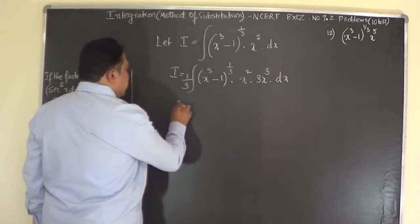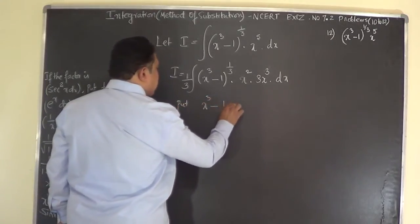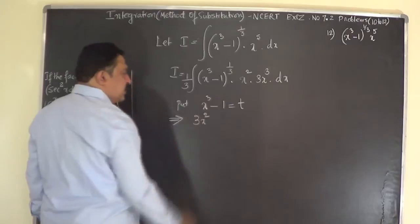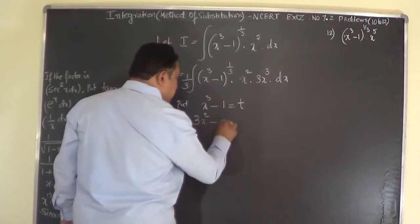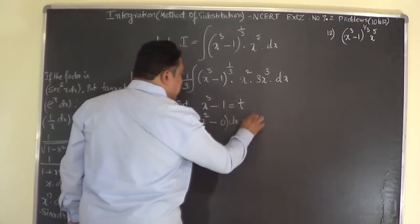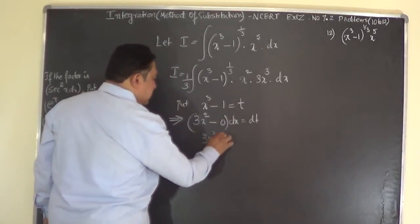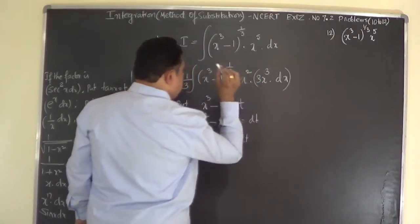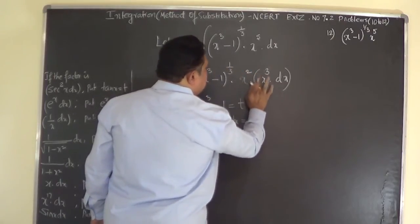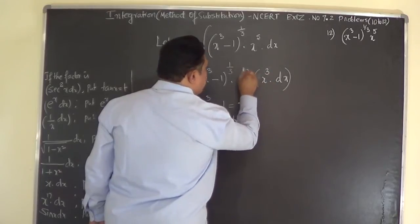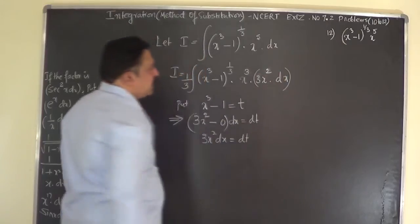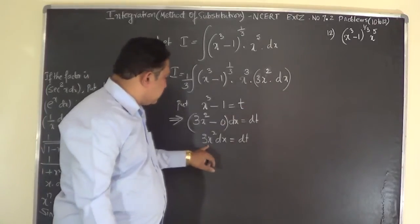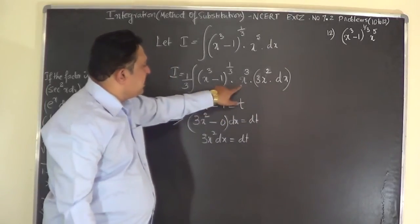If we put x³ minus 1 equals t, then differentiating: 3x² dx equals dt. So we can replace 3x² dx with dt. We are left with x³, and from the substitution x³ minus 1 equals t, we get x³ equals t plus 1. So we can express x³ in terms of t.